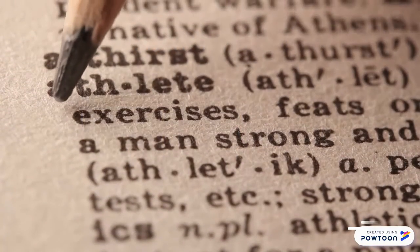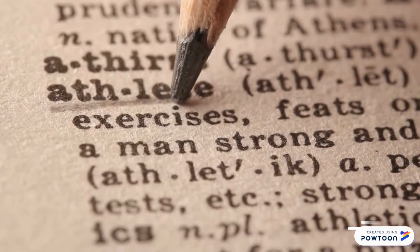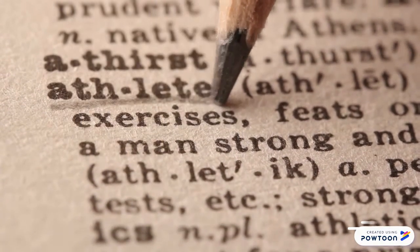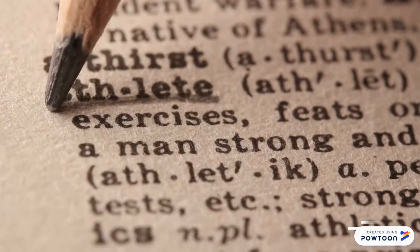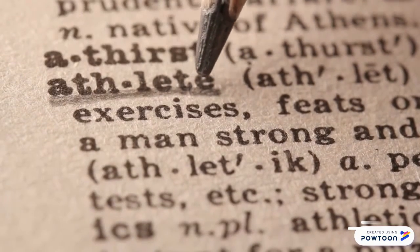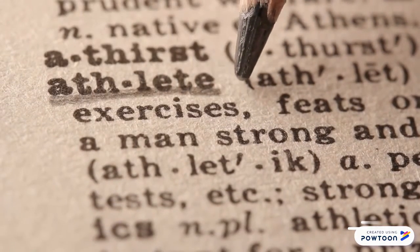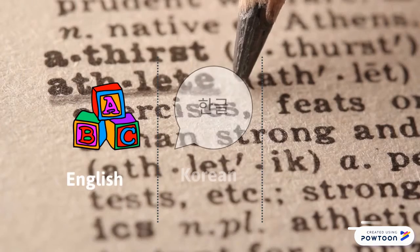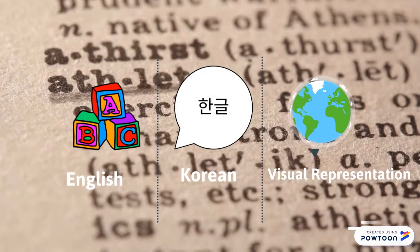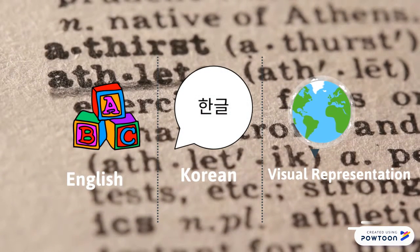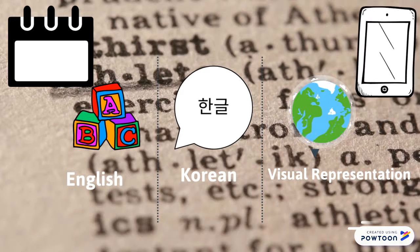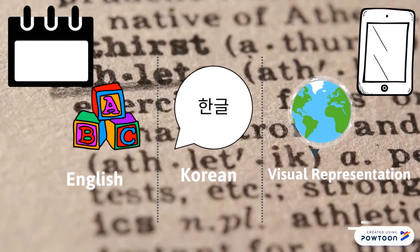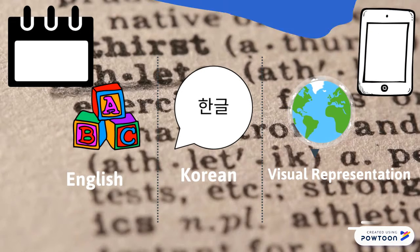In Seungji's case, we would suggest introducing a personalized dictionary that includes words she does not know. It will be broken down into three components: words in English, Korean, and visual representations of those words. Graphic organizers, as well as assistive technology, can help strengthen the connections between her dictionary and curriculum subjects.